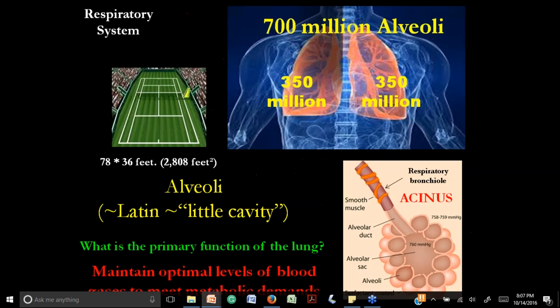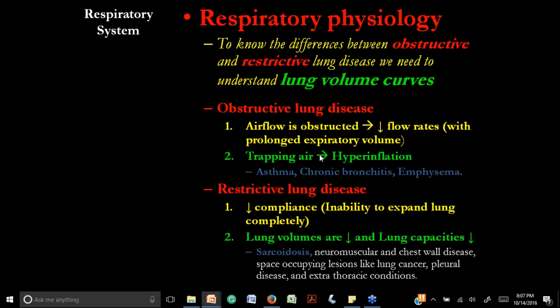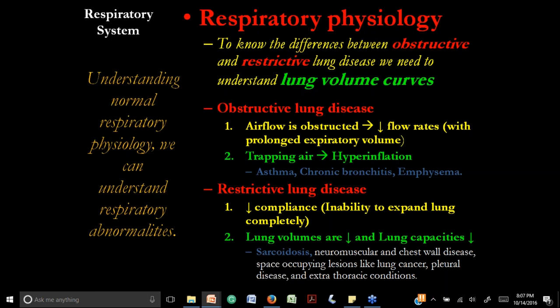In this class, we'll cover respiratory physiology as a summary of today's topics. At this level, we need to understand respiratory physiology of the lung in order to understand the main respiratory diseases. We need to remember lung volumes and lung capacities. There are two main problems: obstructive lung disease — including asthma, chronic bronchitis, and emphysema — and restrictive lung disease.